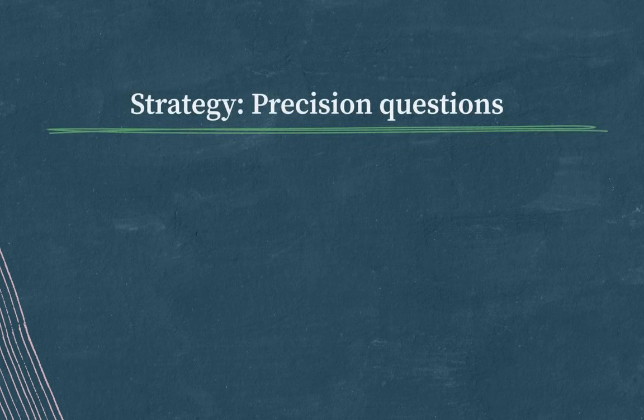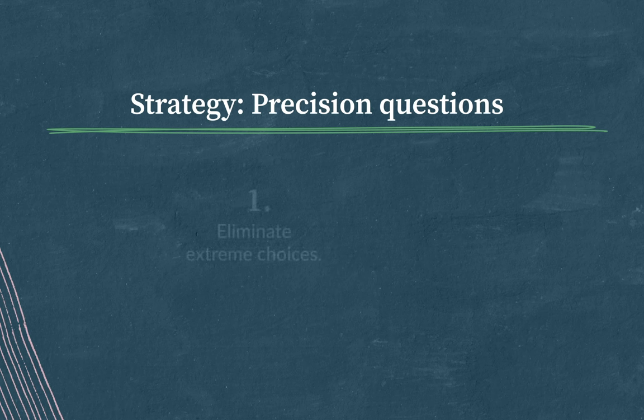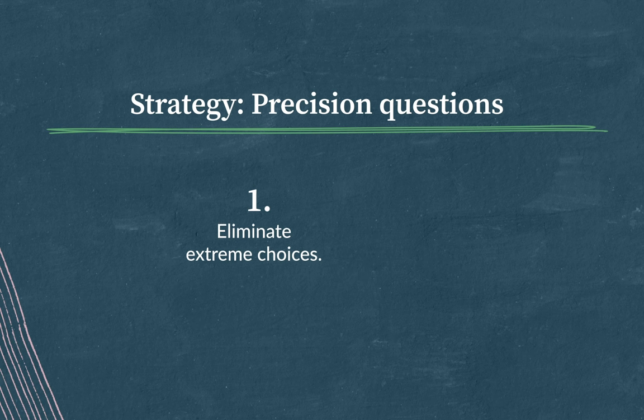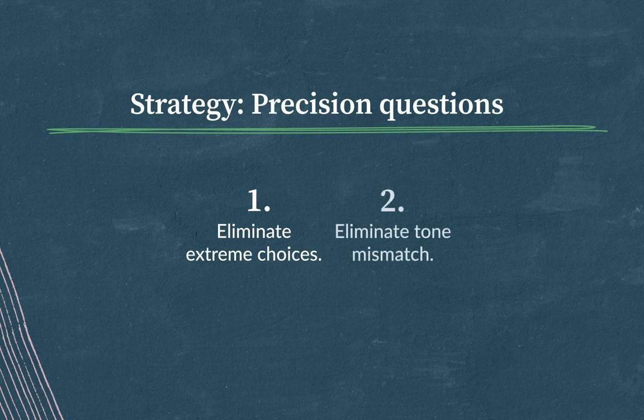So overall, your strategy for precision word choice questions is to think about connotation and context. And so in that vein, I would say, number one, eliminate extreme choices. Anything that doesn't seem to match the context that feels too wild or out there, you can safely get rid of. Number two, eliminate tone mismatch. If you detect that the tone of the context is very positive, for example, if the passage was about the beauty of birdsong and one of the choices was screeching, screeching seems like too negative of a word to go along with the pretty birdsong passage. So you can safely eliminate that tone mismatch. And with that strategy in your pocket, you should feel confident about being able to answer precision questions on the SAT.